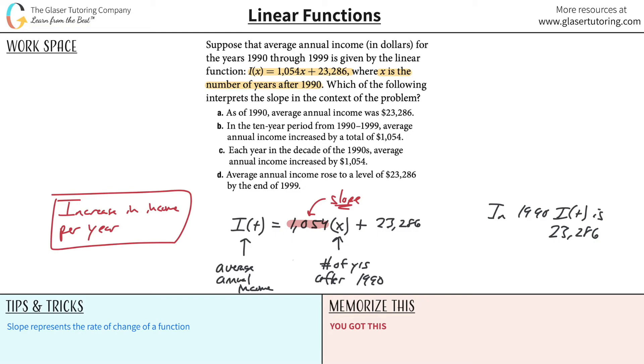Let us see. Each year in the decade of the 1990s, average annual income increased by $1,054. I'm going to put a little check here. That sounds the best to me so far.